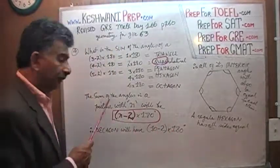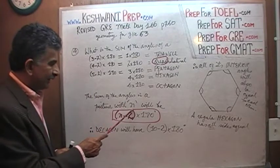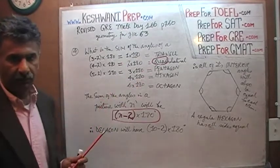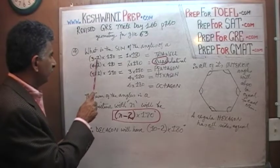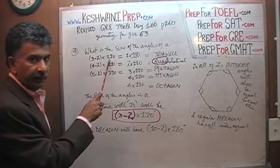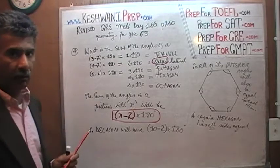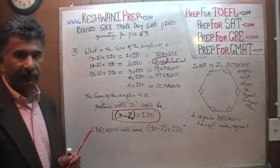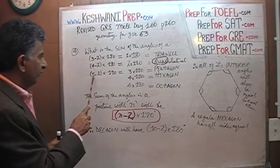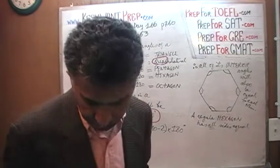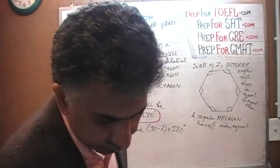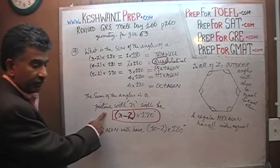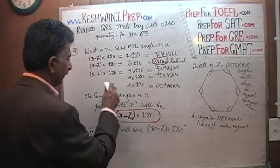What we learned yesterday was that if we have a polygon with n sides, the sum of the angles in an n-sided polygon is equal to (n minus 2) times 180. For example, a triangle has 3 sides, so the sum of its angles is (3 minus 2) times 180. A quadrilateral has 4 sides, so it is (4 minus 2) times 180, which gives 360 degrees. A pentagon has 5 sides, so it is (5 minus 2) times 180, and so on. We are going to need that formula.